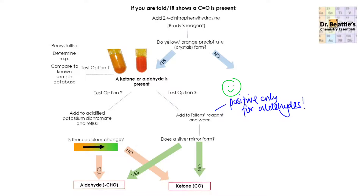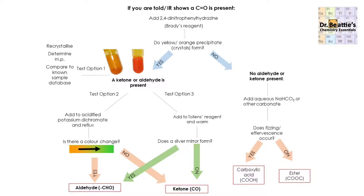It's worth noting that depending on the question, if you're told it's an aldehyde or ketone, you can jump straight to either test two or test three — you don't have to add Brady's reagent. Now, if you do know that you have a carbonyl (C=O) and when you add Brady's reagent you don't get any yellow or orange crystals forming, then you know no aldehyde or ketone is present. So with the knowledge that you've got C=O in there, adding either a metal carbonate or metal hydrogen carbonate and working out whether fizzing or effervescence occurs will tell you: if it does occur, you've got a carboxylic acid; if it doesn't, it's possibly an ester or acid anhydride.